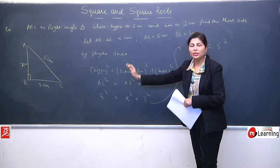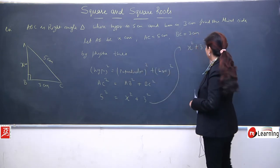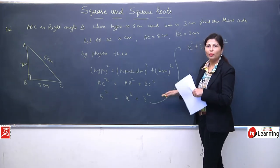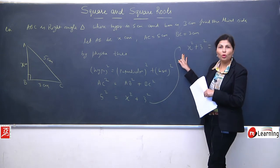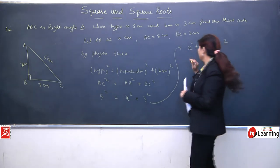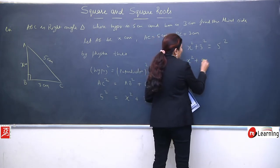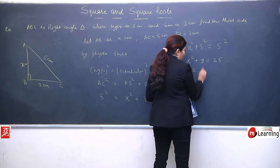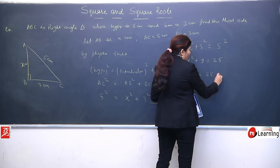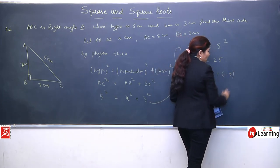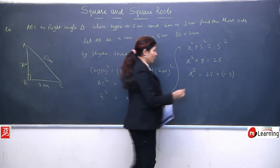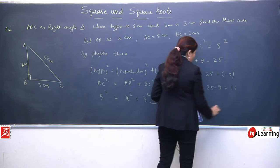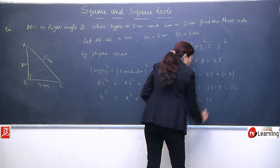This becomes our equation: 5 square equals x square plus 3 square. First let's rearrange this so it becomes easy to solve. Means we put RHS on LHS side, LHS on RHS. There's no difference, either you can write this way or write this way. But the variable we prefer to be on left hand side, so finding becomes slightly easier. Now it becomes x square plus 9 equals 25.